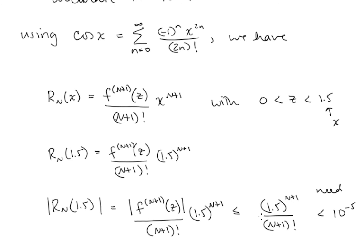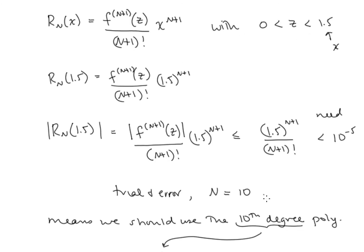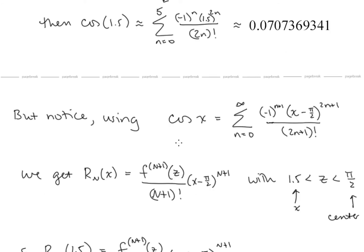Using trial and error, we see that n equals 10 works, telling us to use the 10th degree polynomial. In this notation, the 10th degree polynomial occurs when the upper limit for n is equal to 5. So our approximation using the series centered at x equals 0 looks like this.